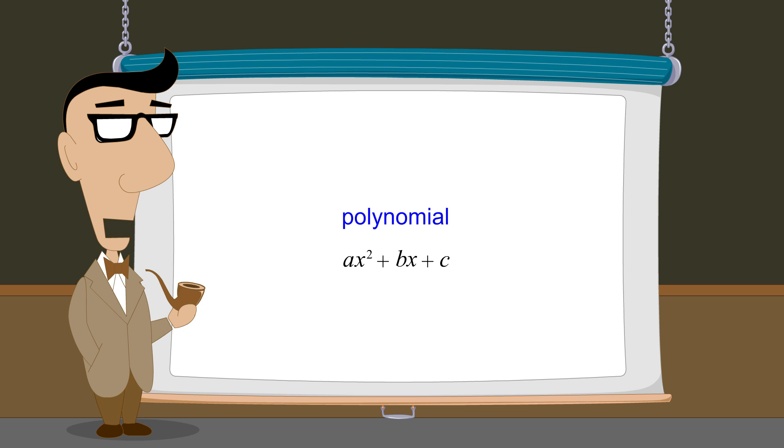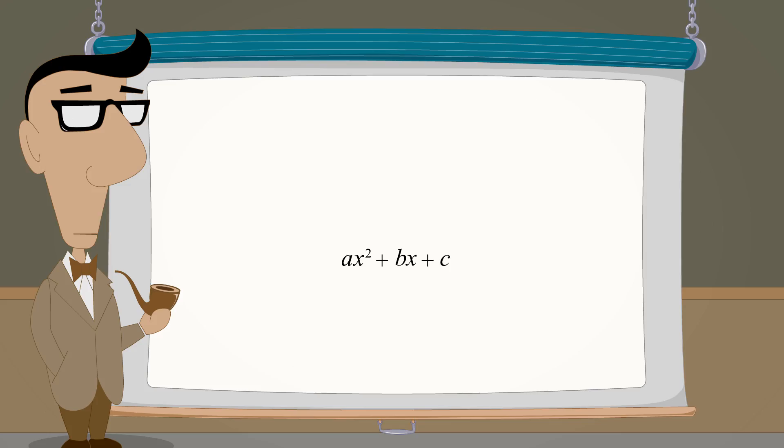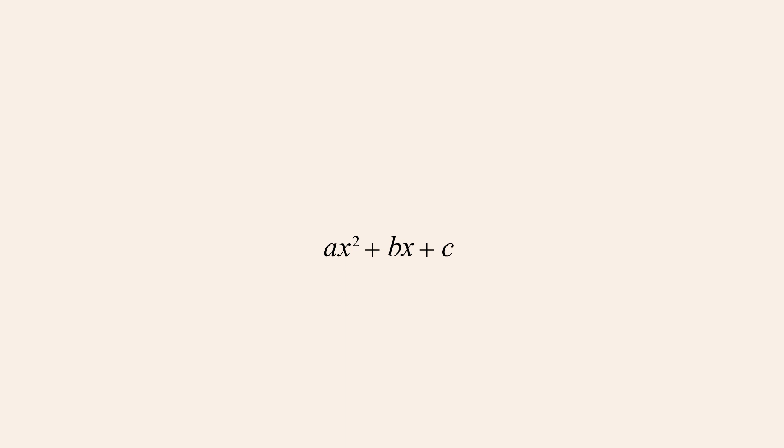Polynomials are a more general type of algebraic expression than quadratic expressions. A polynomial containing a single variable x is referred to as a polynomial in x. A polynomial in x is composed of one or more terms.